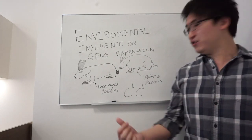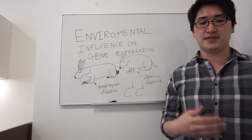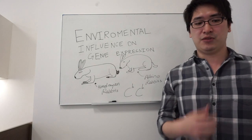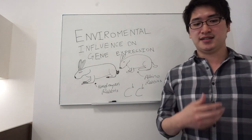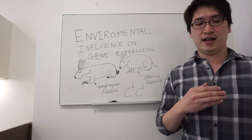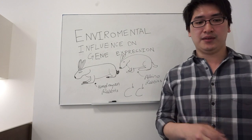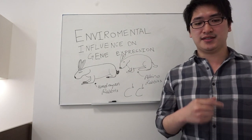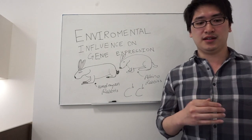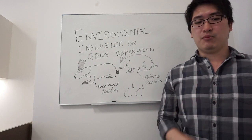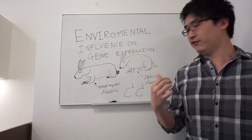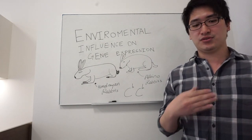The C^h allele codes for an enzyme used in pigment formation, which is temperature-sensitive. The allele is inactivated by temperatures above 34 degrees Celsius, which results in an albino phenotype. If the temperature is lower, the same allele promotes synthesis of dark pigment, giving a black phenotype. Moreover, when rabbits of these genotypes are grown in a cold environment, they can be completely black as well.